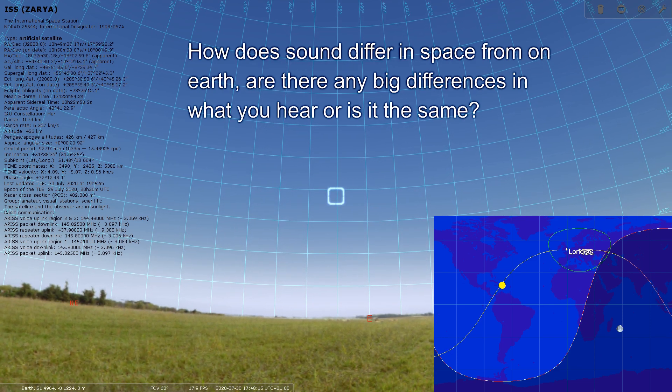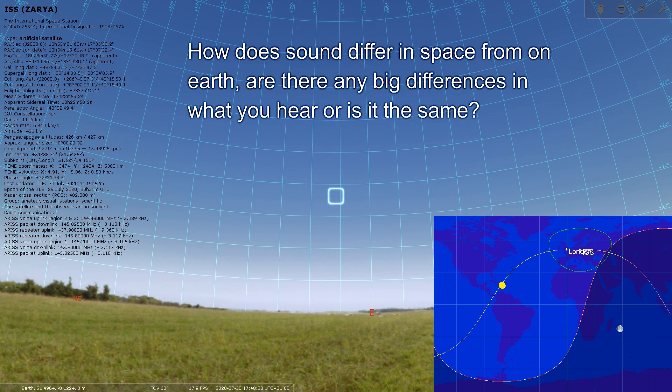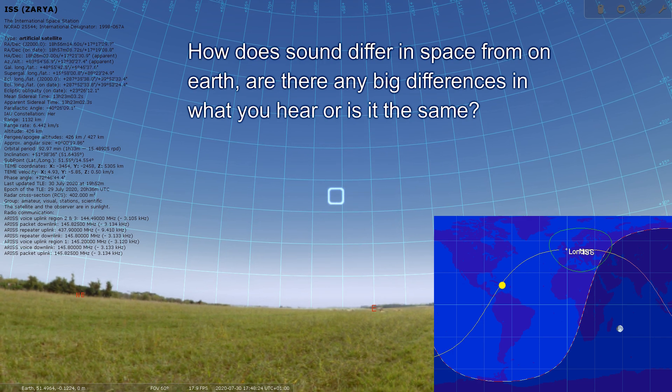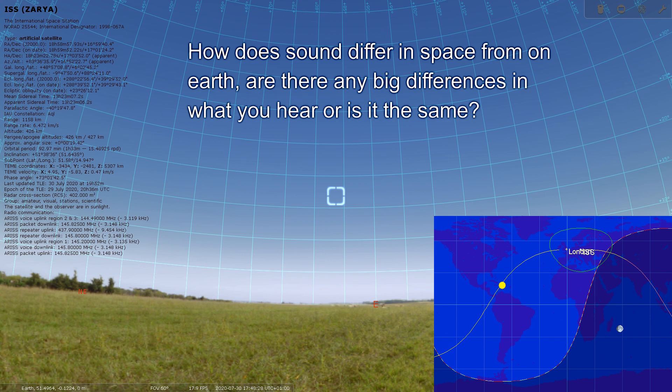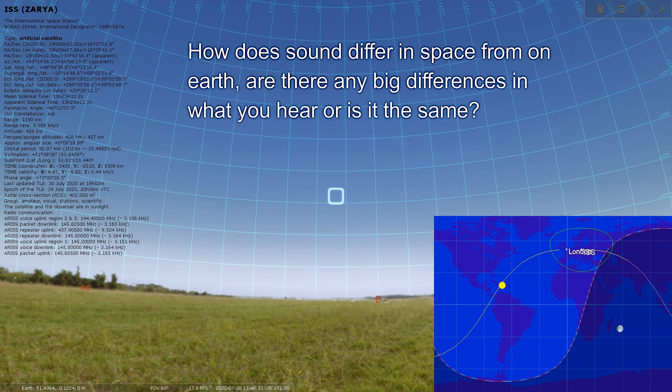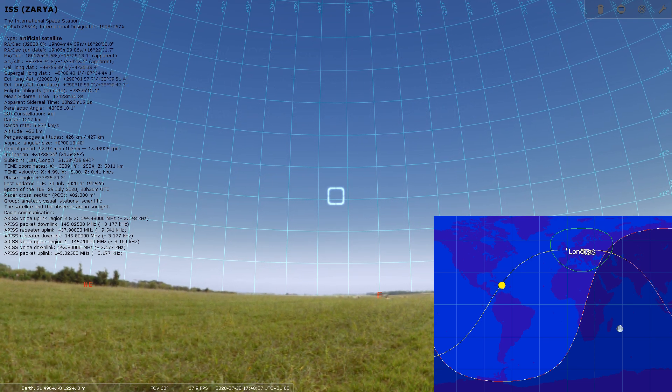Santiago, inside the space station, it sounds a lot the same as what you're used to. We have a lot of background noises, fans, machinery noises, and pumps. So it's a little bit noisy inside the space station. Outside the space station, it's a vacuum of space and the sound does not propagate through the vacuum. So there's really nothing to hear out there. Over.